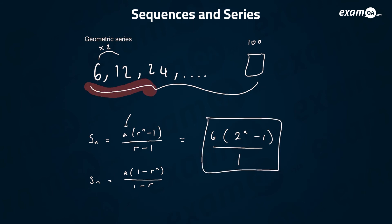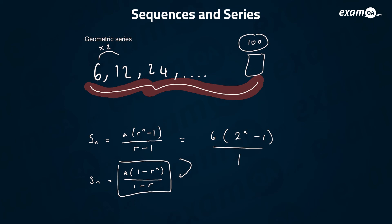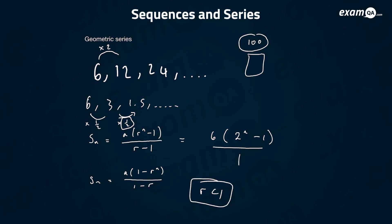They also give you another formula: Sn equals a times (1 minus r to the power of n) over (1 minus r). They're actually the same formula — all that happened is we multiplied top and bottom by minus 1. The only time you'd normally use this second version is when the ratio is less than 1. For example, if you have a ratio like 6, 3, 1.5 — you're multiplying by a half each time. But honestly, if you just memorize one of them, it doesn't matter too much.